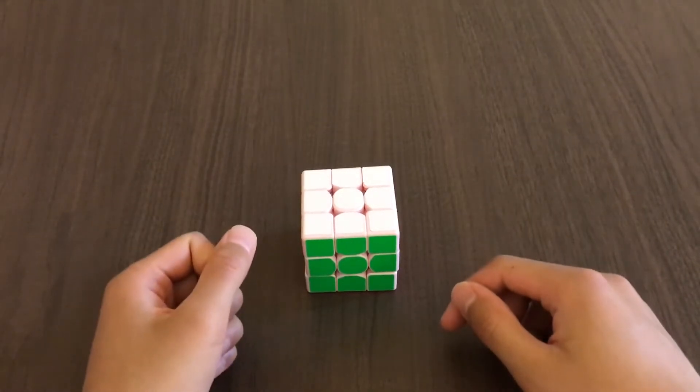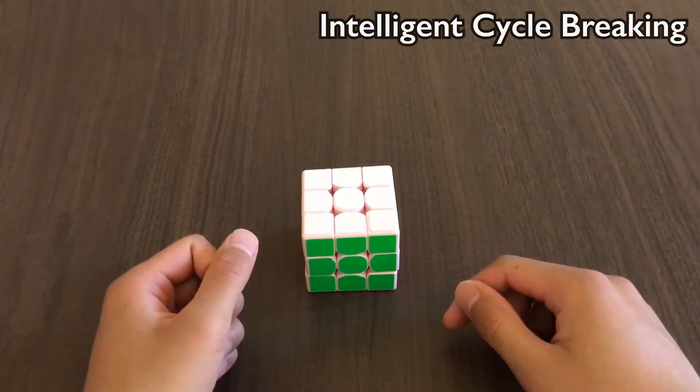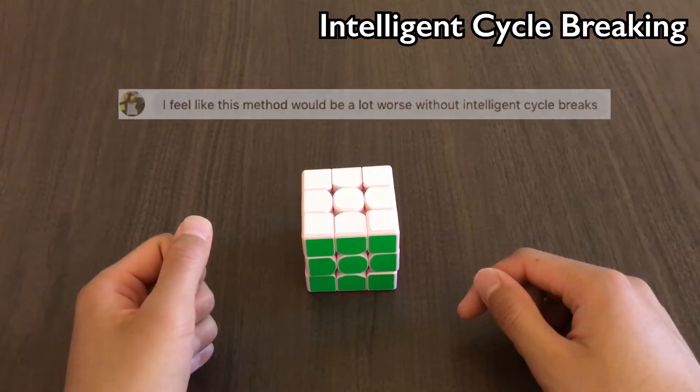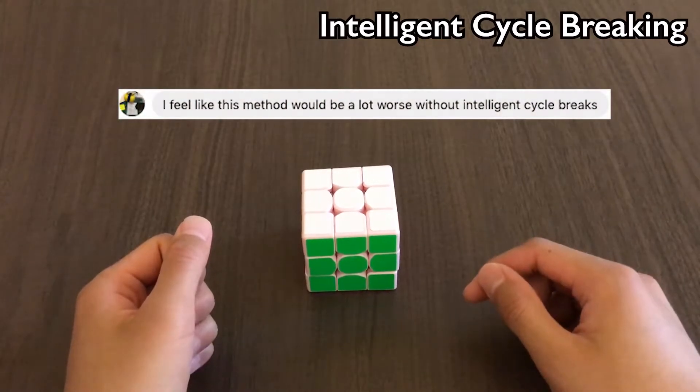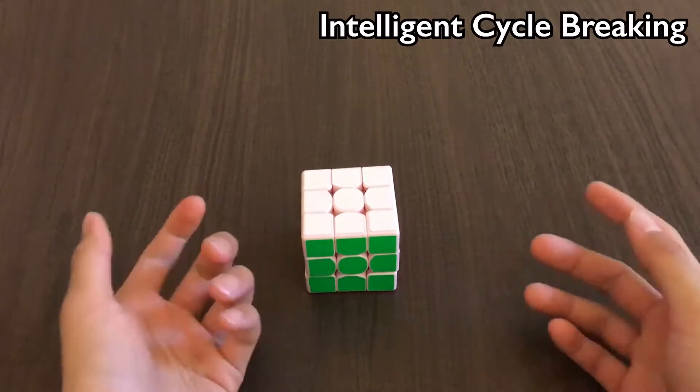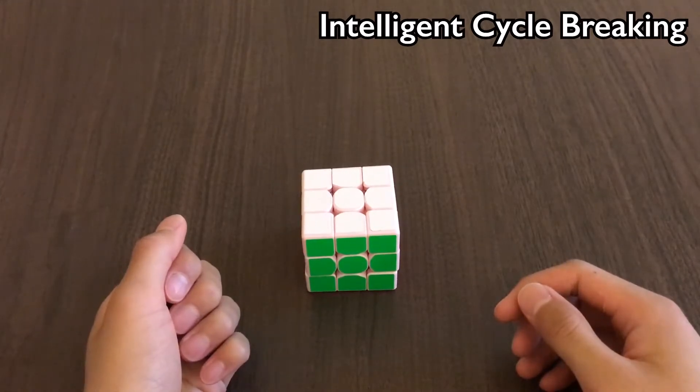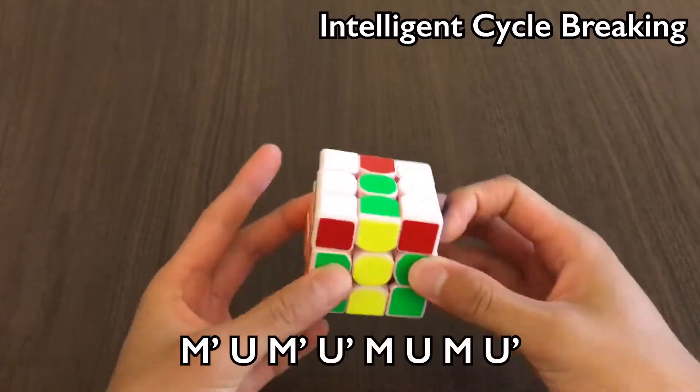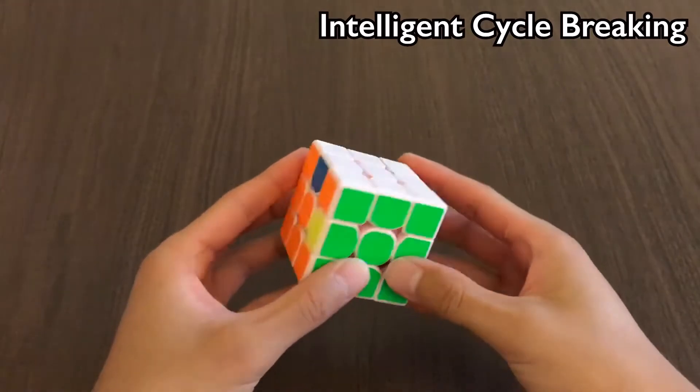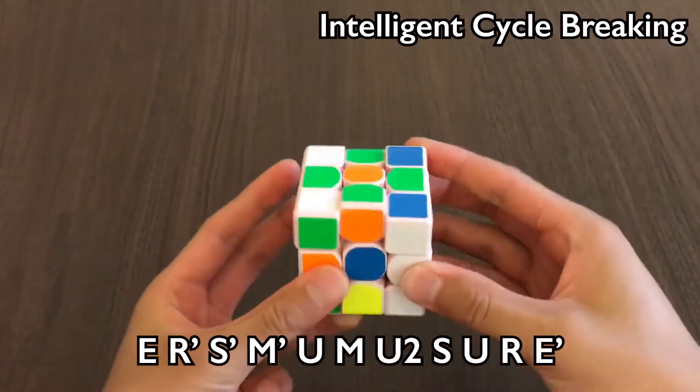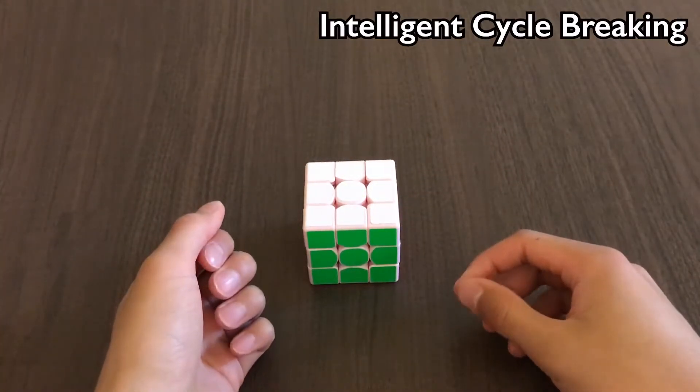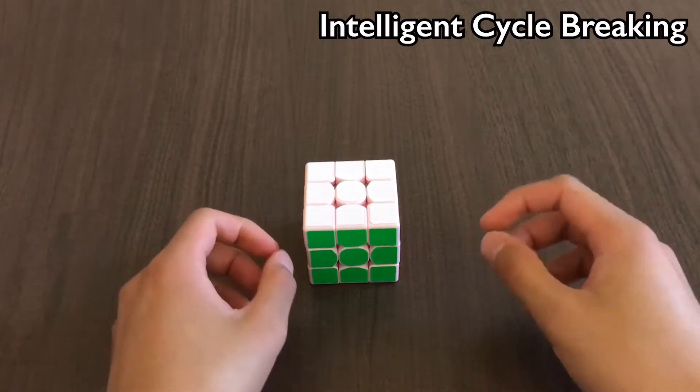A really important trick you should know when using this method is intelligent cycle breaking. Angelo Zhang, the three blind world record holder, says that one of the reasons 2E2E is so good is because of intelligent cycle breaking. So what is this trick? Well first, we have to understand that some 2E2Es are faster than others. For example, the 2E2E for BD is really fast, while the 2E2E for LF is not as fast. However, we can force better 2E2Es by cycle breaking intelligently.